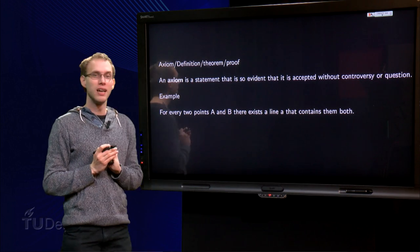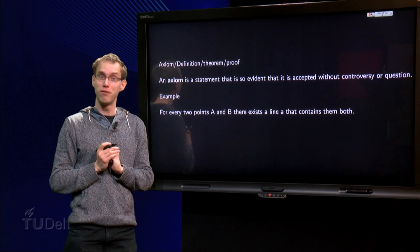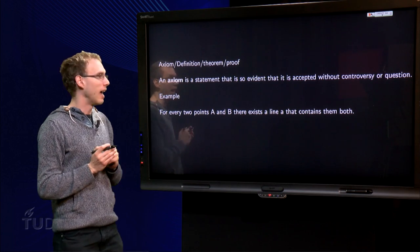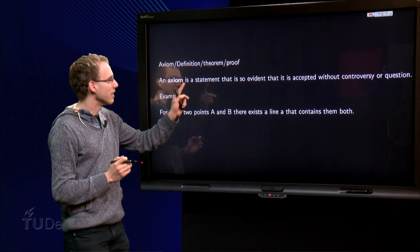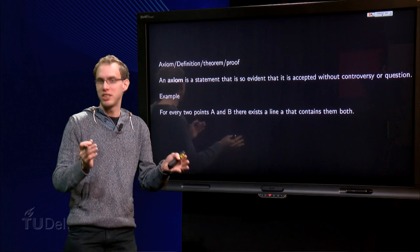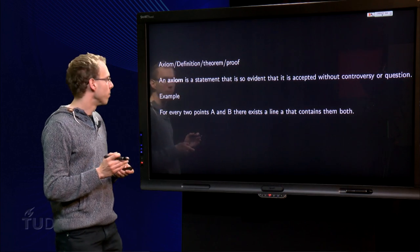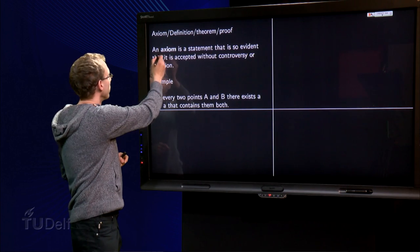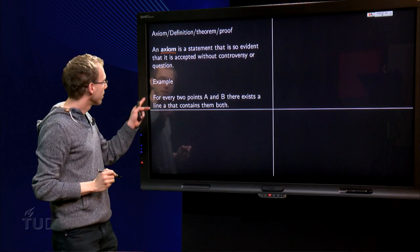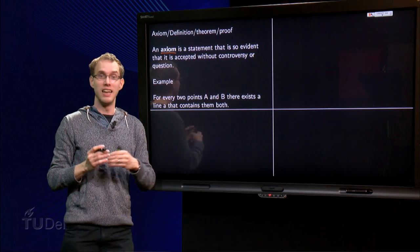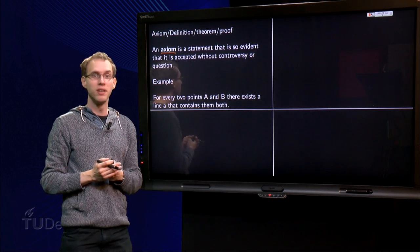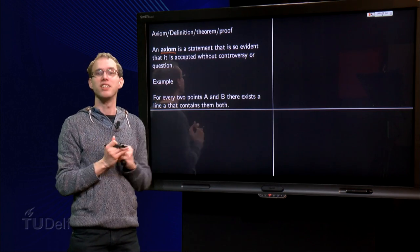Let us look at the axioms first. An axiom is a statement that is so obvious, so evident, that it is accepted without question. An example is, for every two points A and B there exists a line that contains both of them. It seems pretty obvious, I guess.